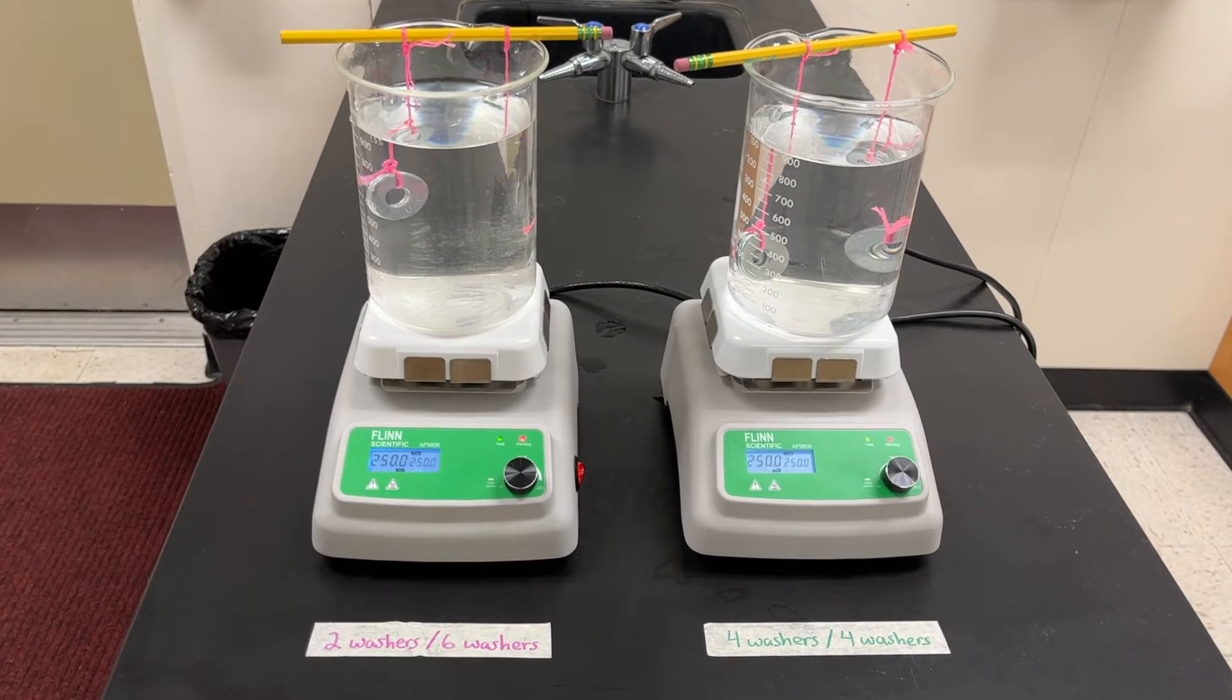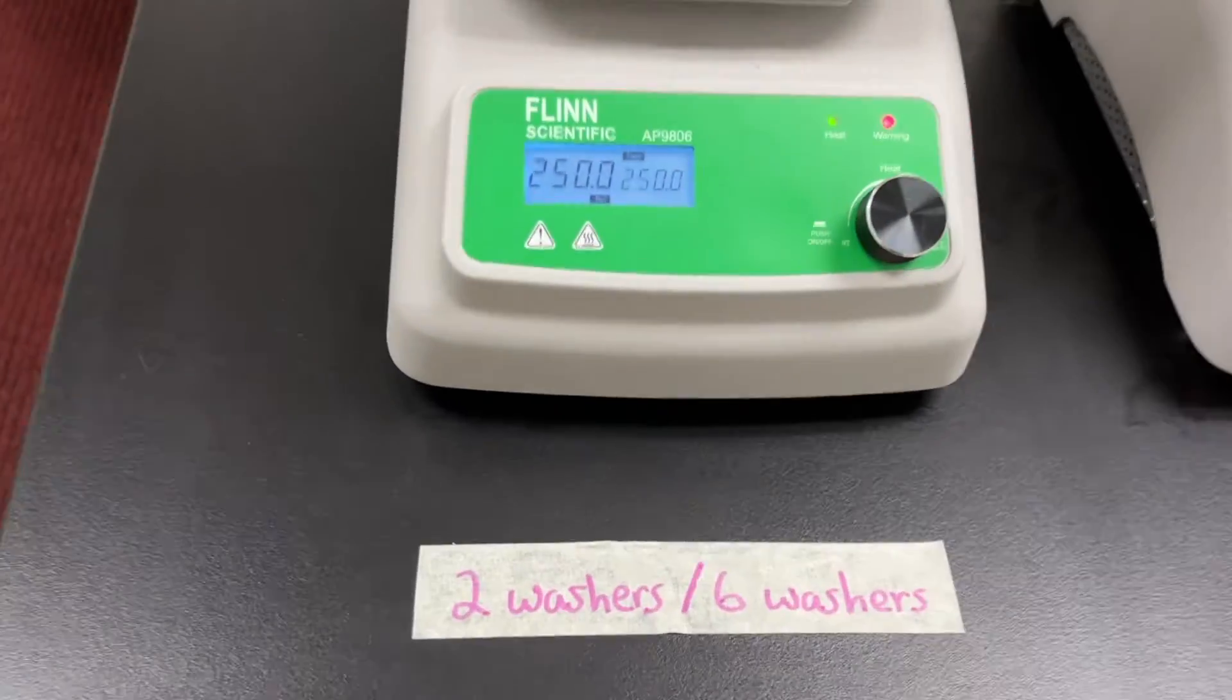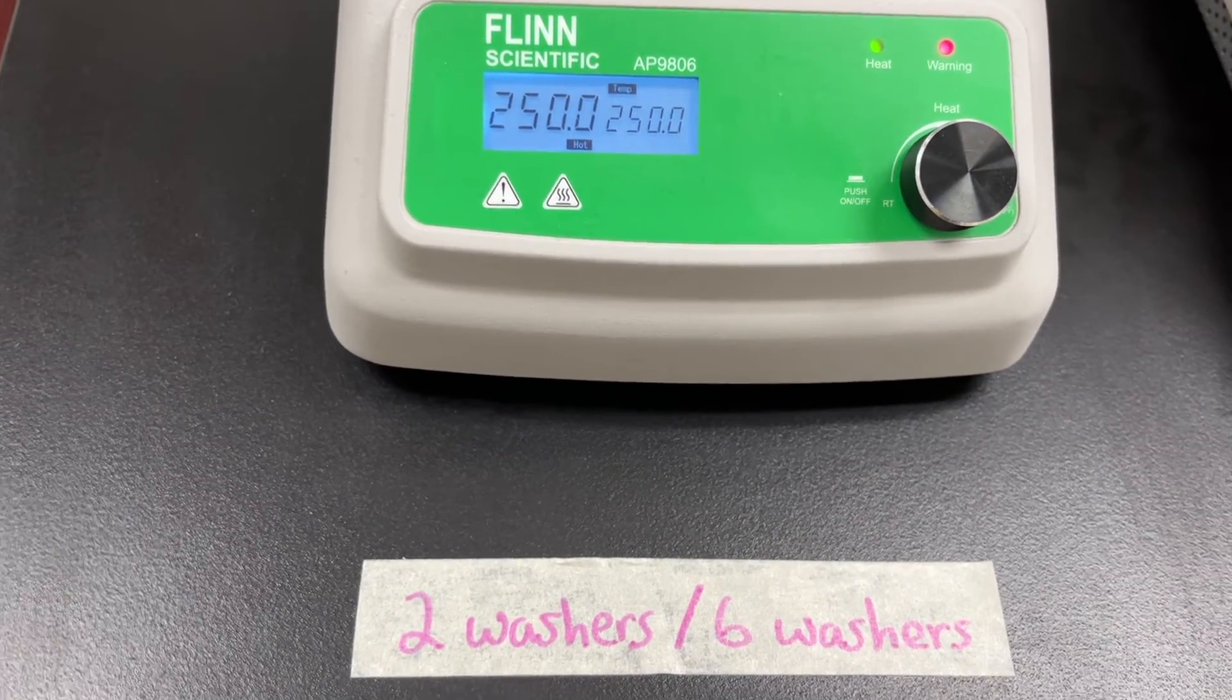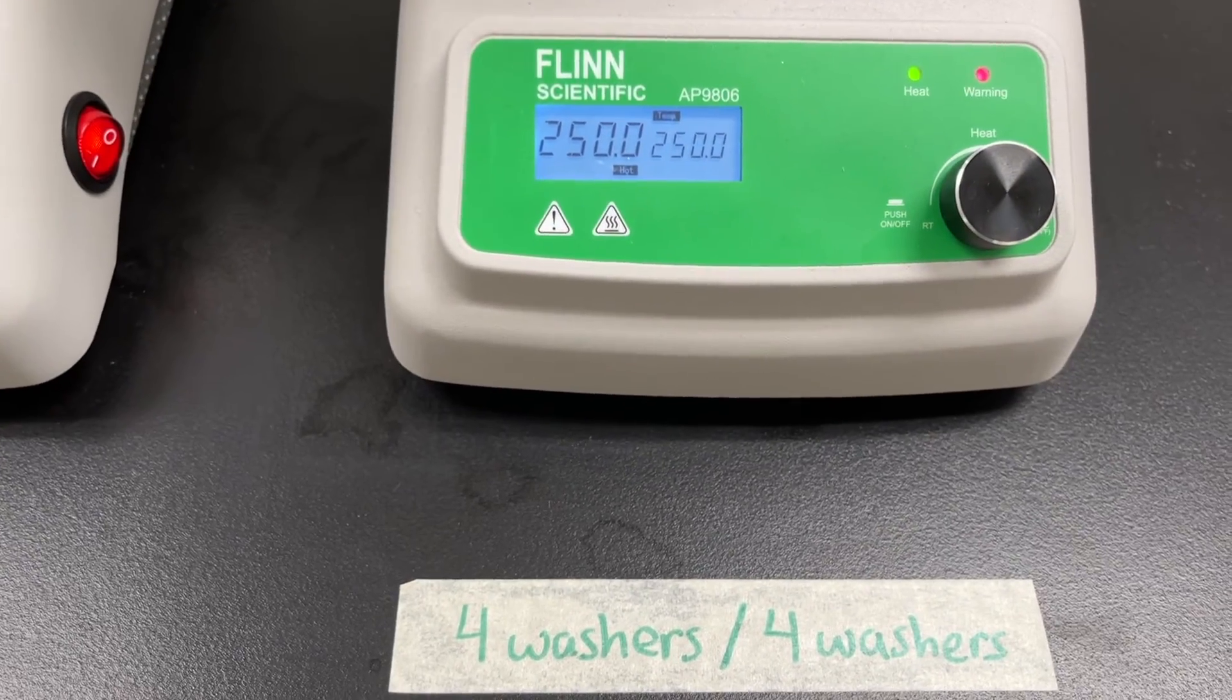Now we need to heat up the washers. You just put a beaker on a hot plate. I set it at 250 here and label it as two washers and six, and the other one as four and four washers.